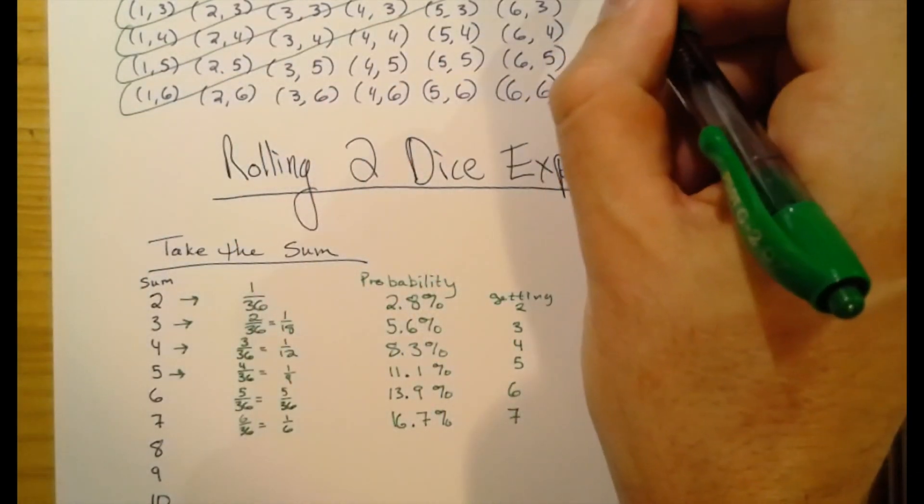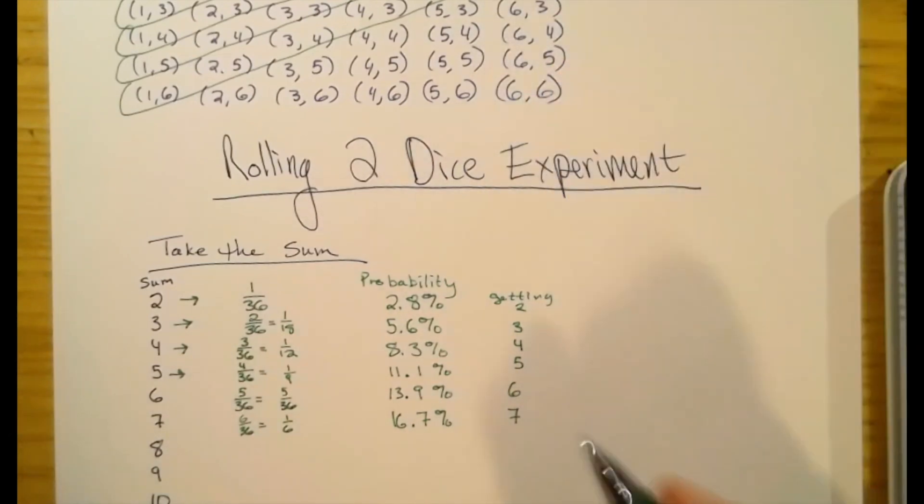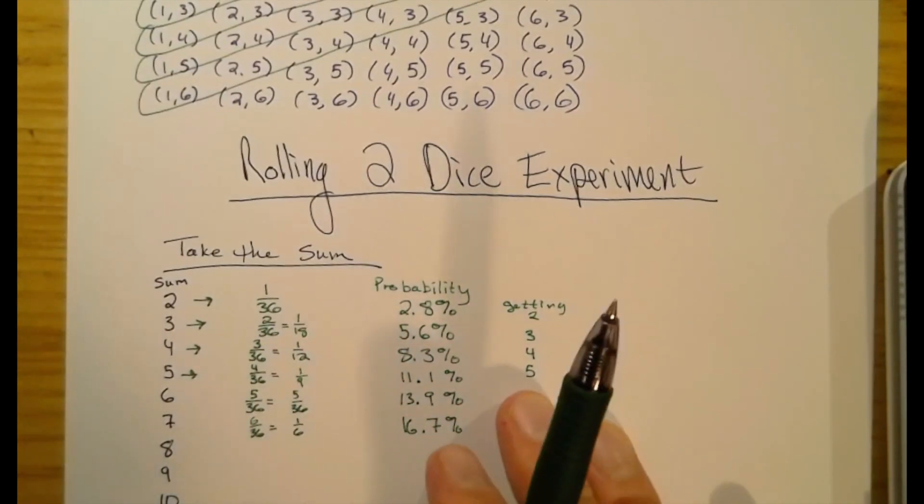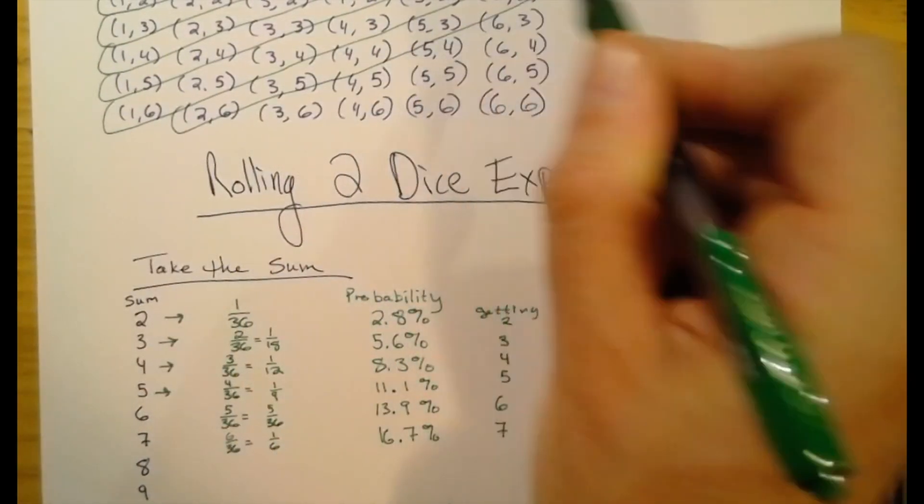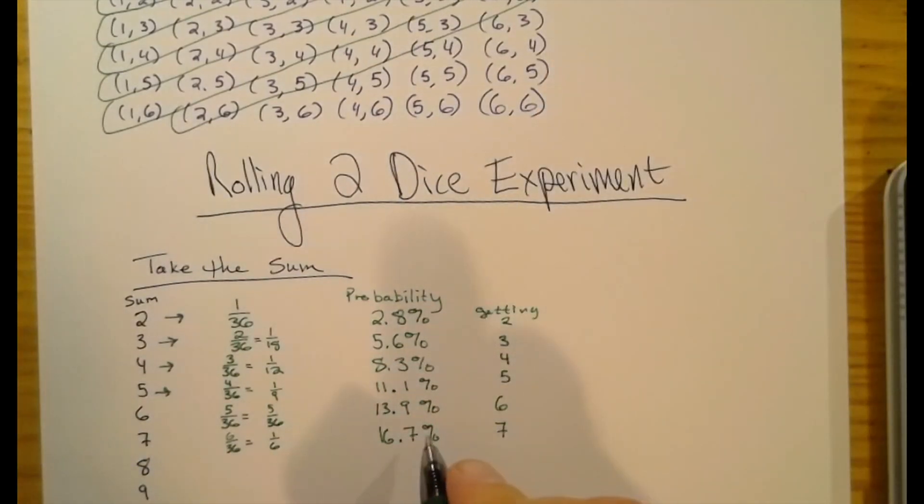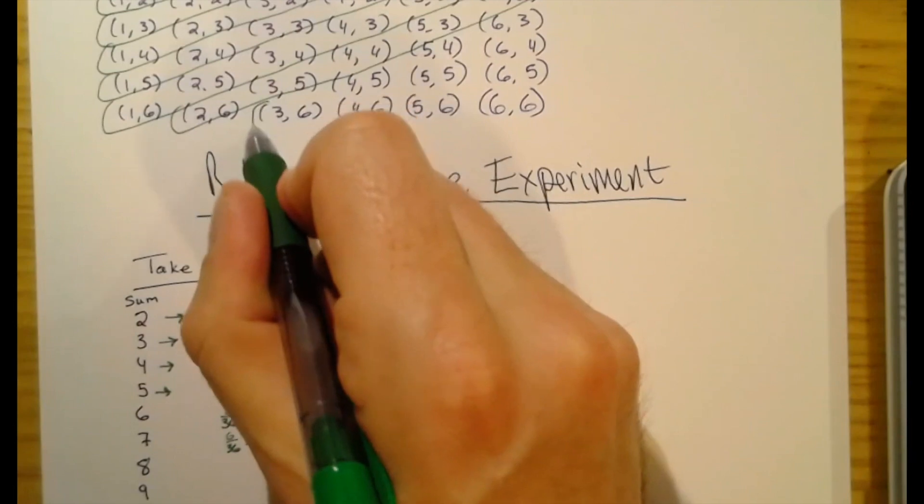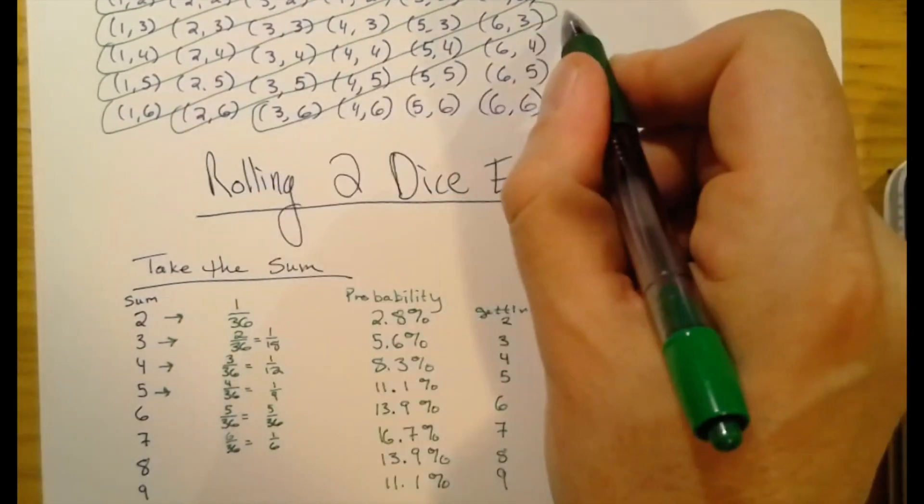There are 6 here that add up to 7. So the probability of that is 16.7%. And then when we take a look at the ones that add up to 8, that's 5 of them again. So the probability of rolling 2 dice and having the sum be 8 is actually the exact same as rolling 2 dice and having the outcome be 6. It's 13.9% chance. And the probability of getting a 9 is actually the same probability of getting a 5.